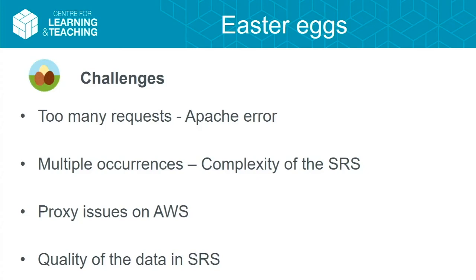The drop-down menu where the lecturer maps the assignment pulls information directly from the student record system. One added benefit of this tool is to start cleaning up that data — when a lecturer logs in and just sees SA, SA, SA, SA in order to map their assignment correctly they need to know which SA maps to which module. So hopefully the quality of data contained in the student record system will also slowly improve over time.